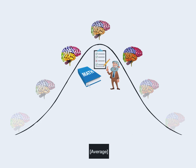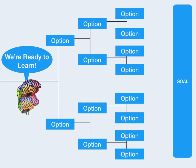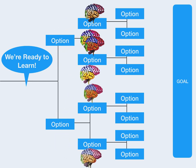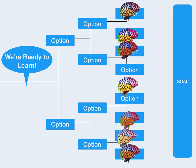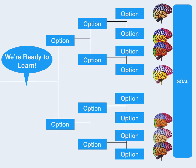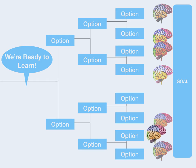Such a system disregards what we know from neuroscience and educational research, that all of us learn best when we can choose from options that best meet our preferences and needs.